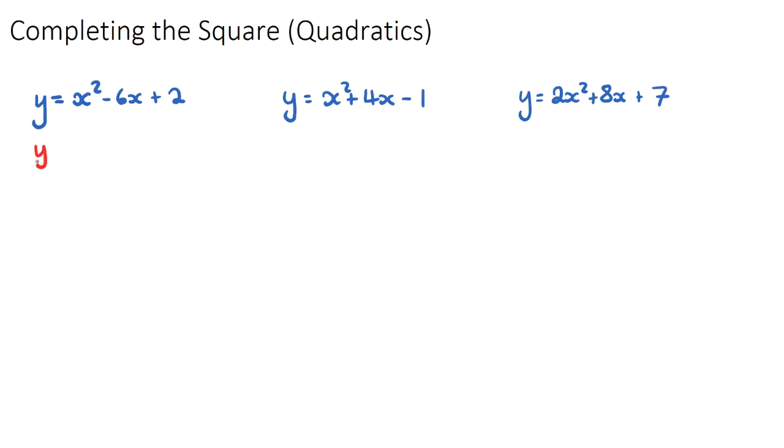So for this first one, we can complete the square if we have a quadratic with three terms by first putting a bracket, and then we take just the x here, which would be x, and we halve the number in front of the x here. So we halve negative six, which would be negative three, and we close the bracket and we put a squared sign.